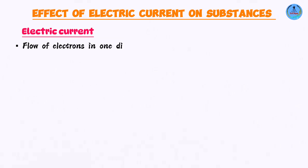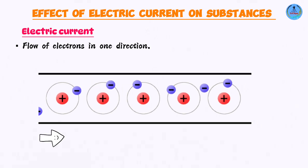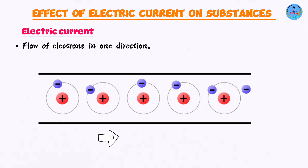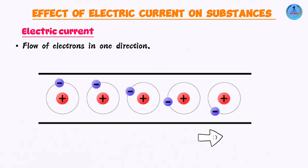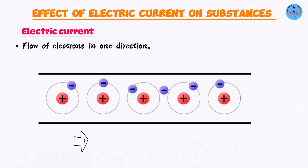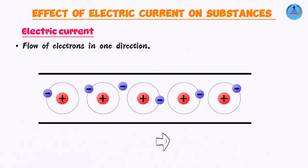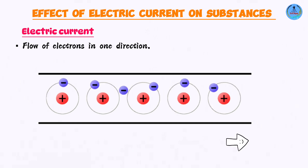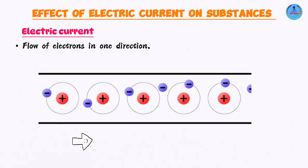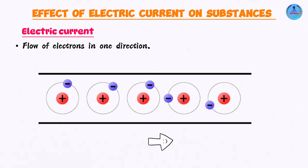Number one, let us start by defining what an electric current is. This is simply the flow of electrons in one direction. Electrons are the negatively charged particles that are found in an atom. When these move in one direction, you end up having an electric current.